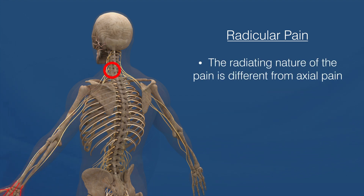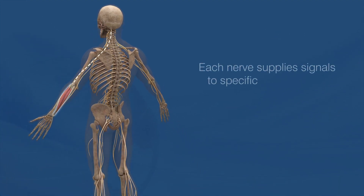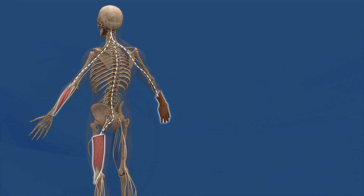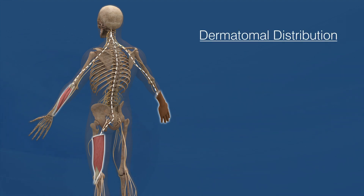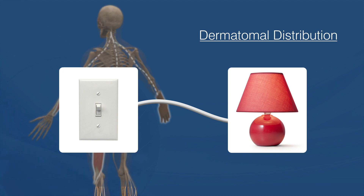The radiating nature of the pain is different from the axial pain we discussed before. Each nerve supplies signals to specific muscles and specific areas of the body. If a specific nerve is pinched, it will cause a specific area to experience numbness, pain, and tingling. This pattern is called the dermatomal distribution, and I will often tell people it's like a light switch — the wire goes from a light switch to a specific light, which is like a nerve going from the spine to a specific area of feeling or to a specific muscle.